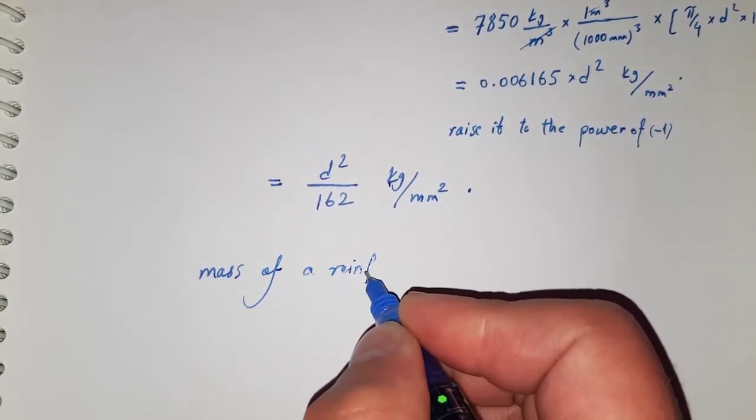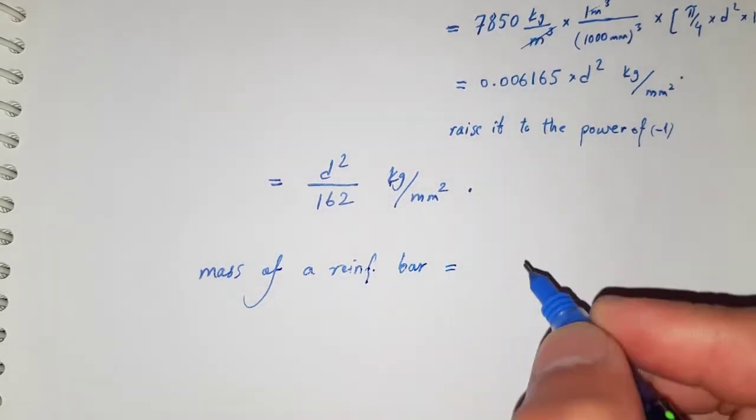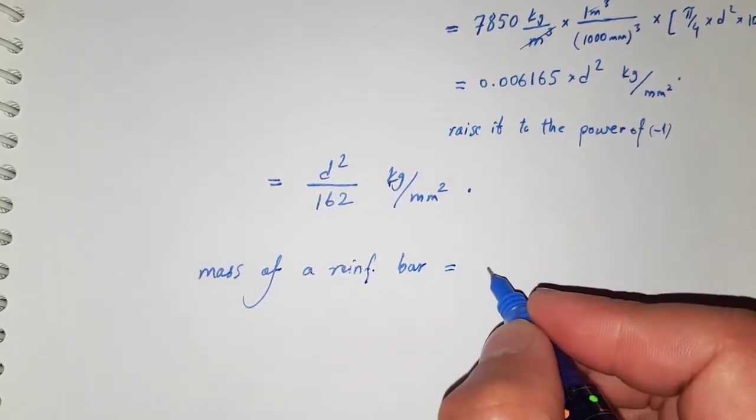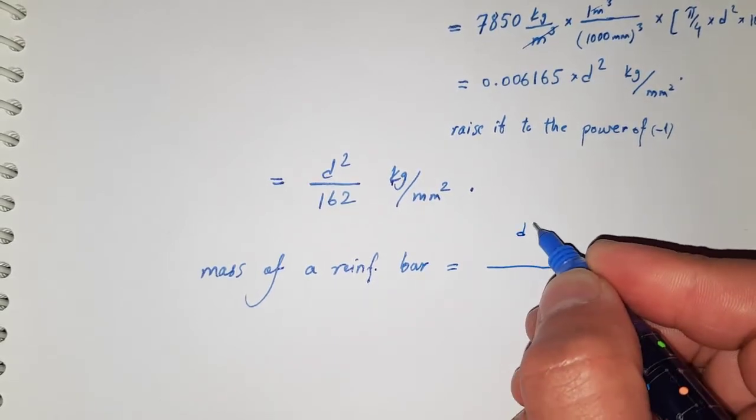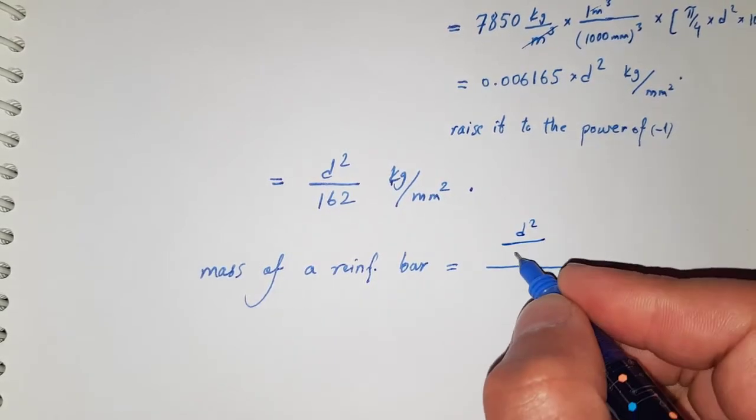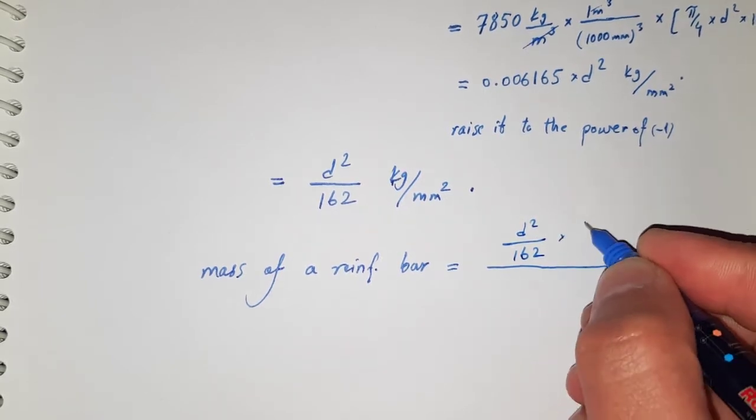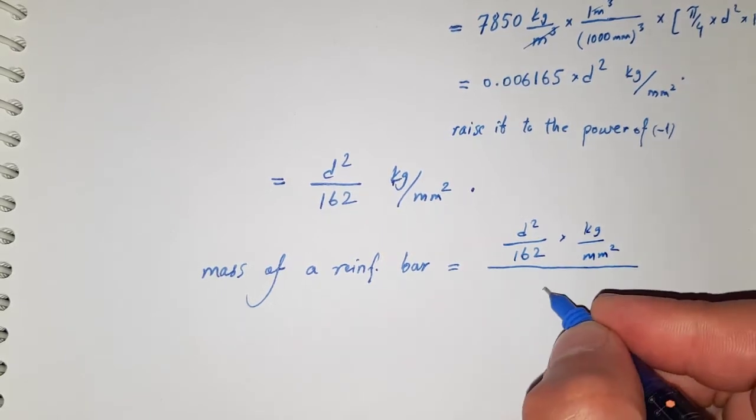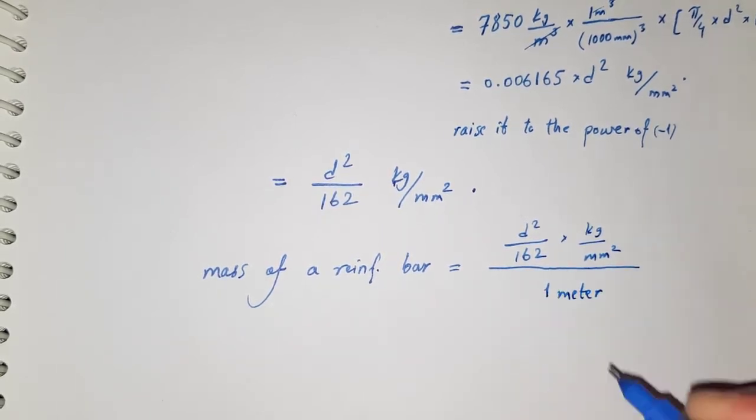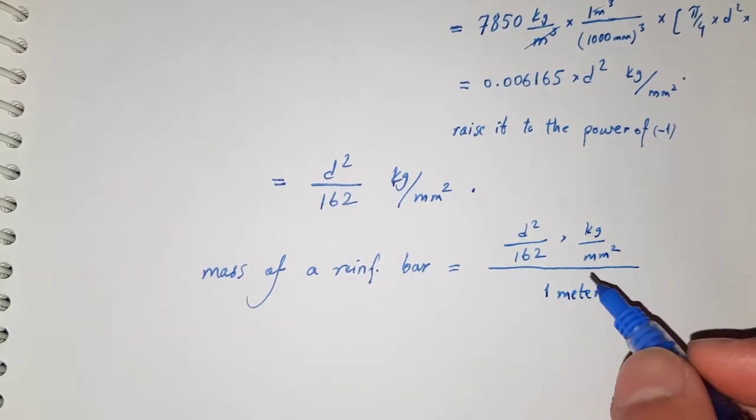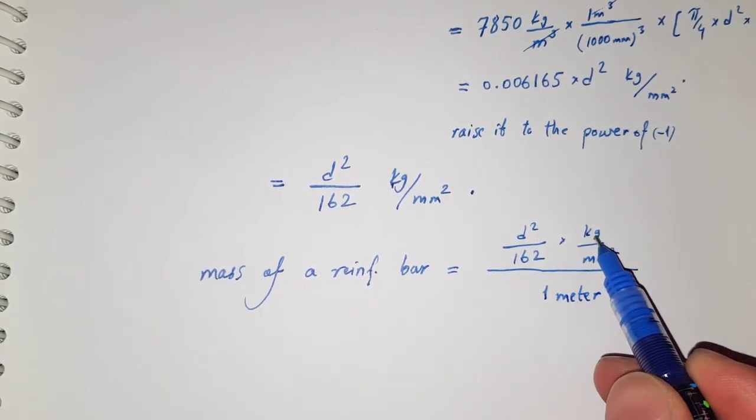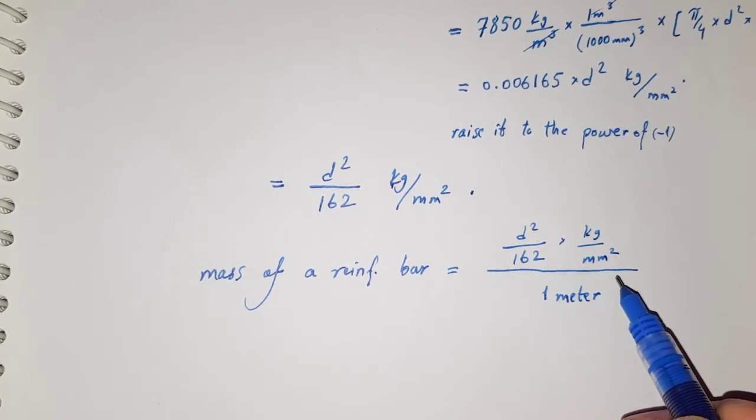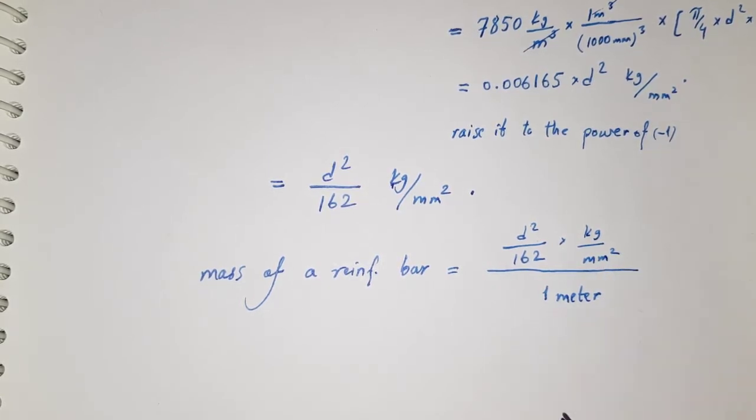...is equal to d square by 162, the unit is kg per millimeter square per 1 meter. Now as we see, all the units are in millimeters and kilograms, means we are using the SI unit. If you want to use the US customary units, then you have to do some types of unit conversions.